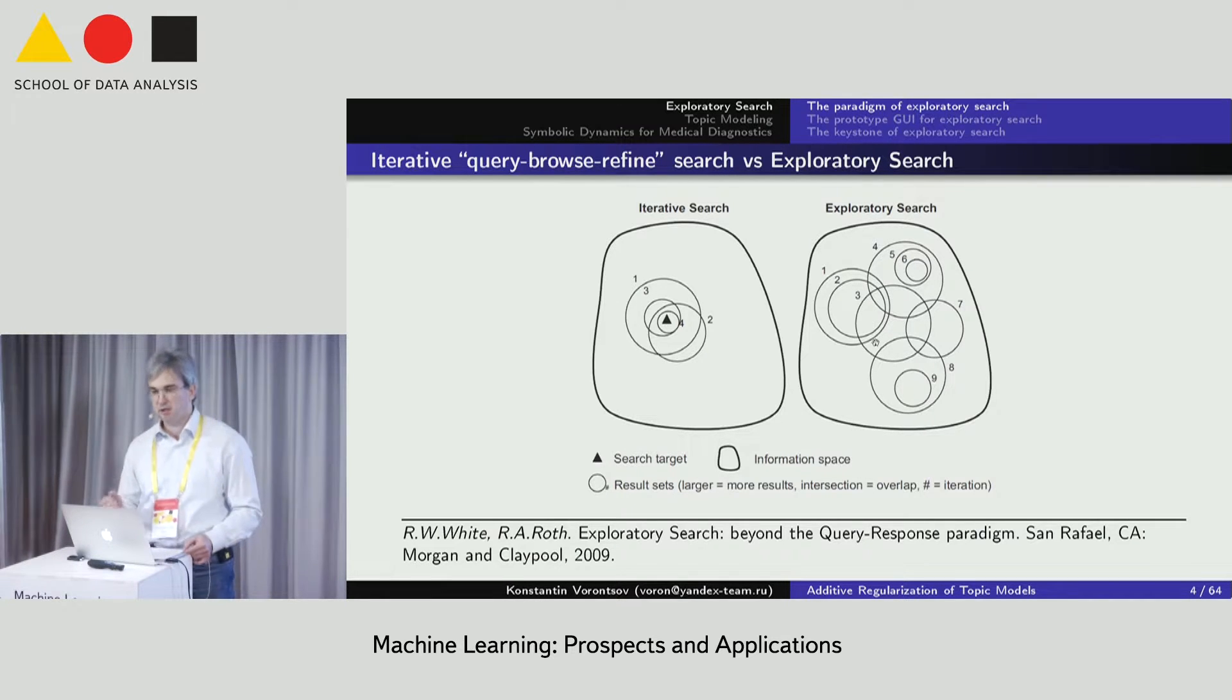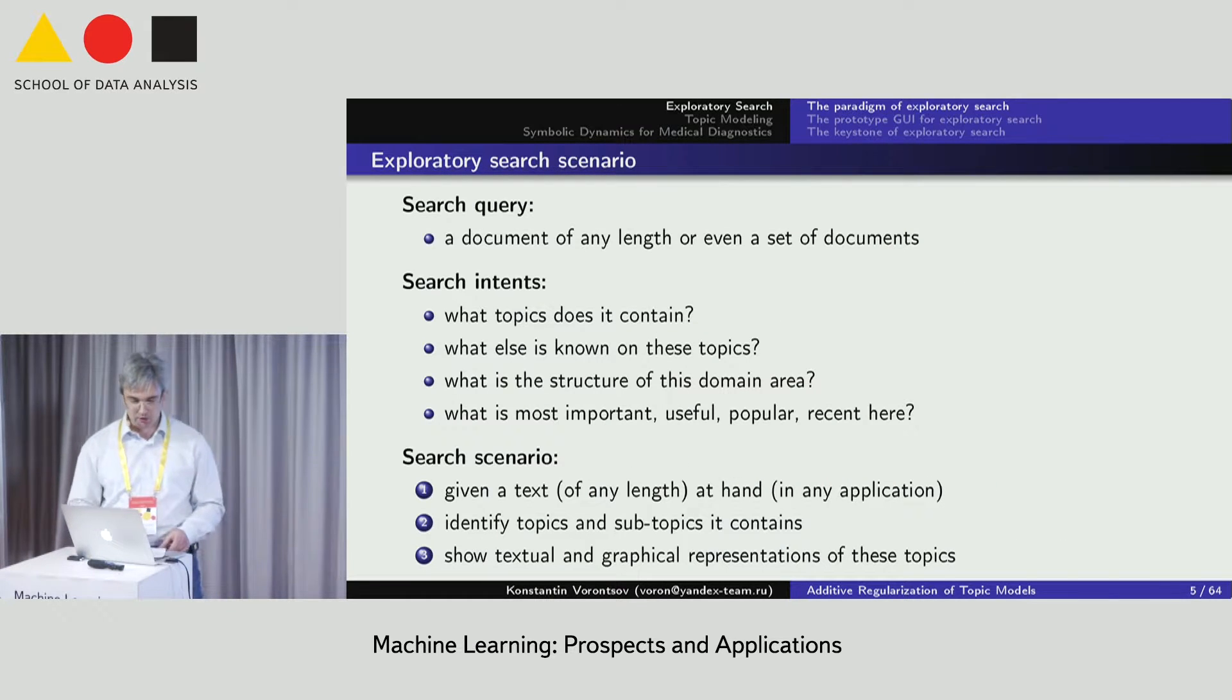Often we hear the sad stories from our colleagues that they worked for a long time on the topic and after this then discovered the paper in which everything has been done before. Is it possible to make knowledge systematization automatically using recent achievements in information retrieval and machine learning? Let us imagine how the exploratory search should work from the user's point of view, from the point of view of us as scientists.